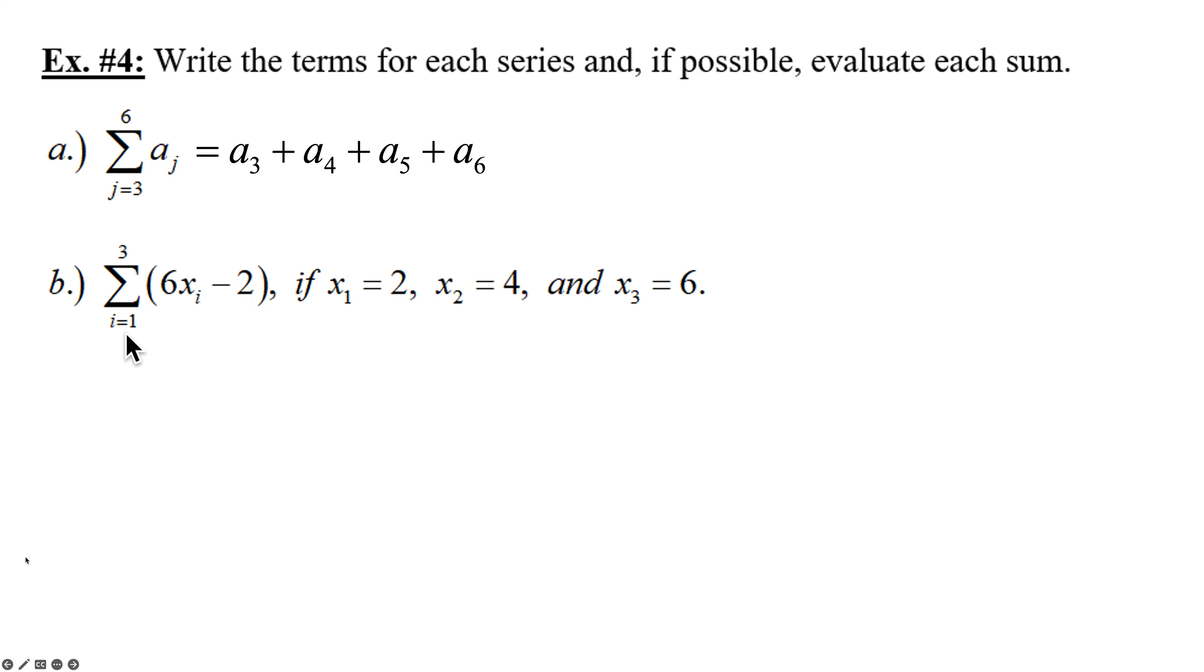Part B. Summation from i equals 1 to 3. 6x sub i. So we're going to be changing that subscript. Then we're going to subtract 2. And then it says if x sub 1 is 2, x sub 2 is 4, and x sub 3 is 6, they're giving us the values. So I list my terms. 6x sub 1 minus 2 plus 6x sub 2 minus 2 plus 6x sub 3 minus 2. Substitute in the 2, the 4, and the 6. And now crunch the numbers. Now we can evaluate. It is possible. So 12 minus 2 is 10. 24 minus 2 is 22. 36 minus 2 is 34. That adds up to be 66.